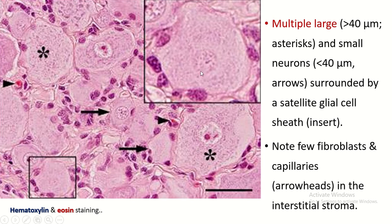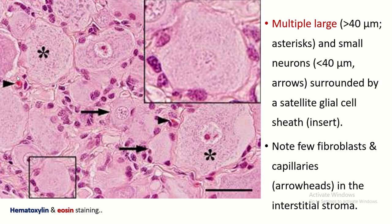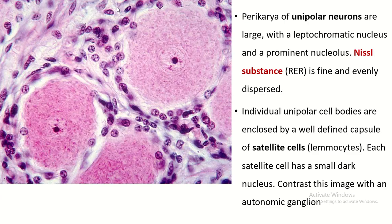This is the cell body of the sensory neuron and this is the satellite cell. See the nucleus of the satellite cell — it is darkly stained. This is the capillary and this is the fibroblast. This is the nucleus of the cell body of the sensory neuron with prominent nucleolus, and this is the cytoplasm. You see the distribution of Nissl granules; it is fine and evenly dispersed. This is the satellite cell — you can see the nucleus of the satellite cell, which is darkly stained.